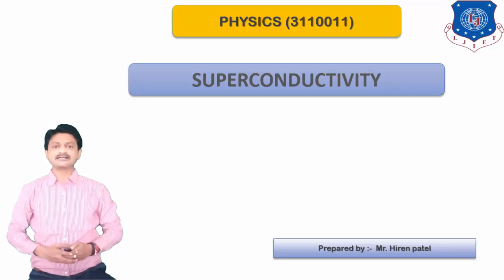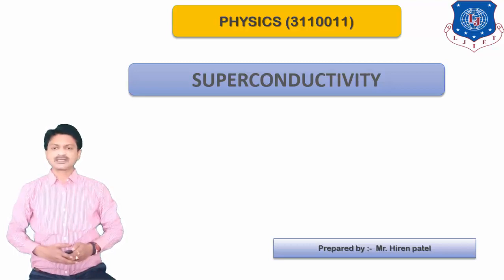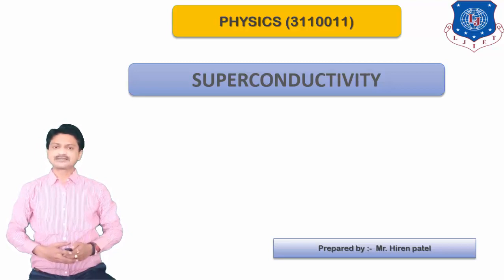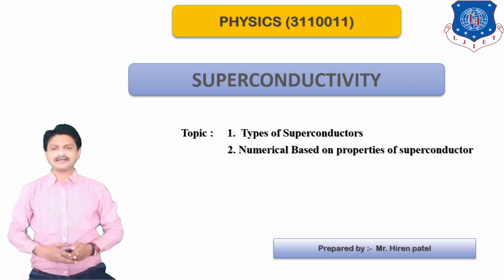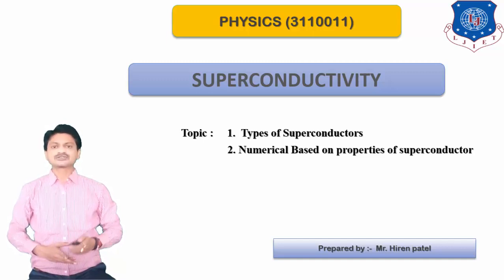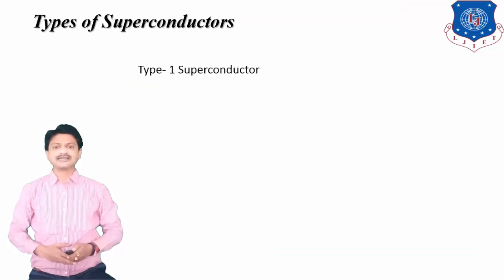We have also studied the Meissner effect in the last video. In today's video, we are covering the topics of types of superconductors and a few numericals based on properties of superconductors. So let's start with the first type — Type 1 superconductor.